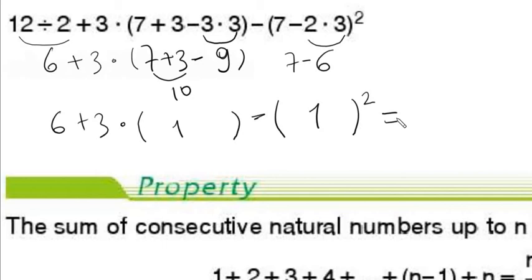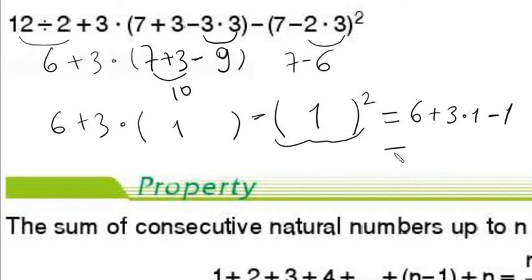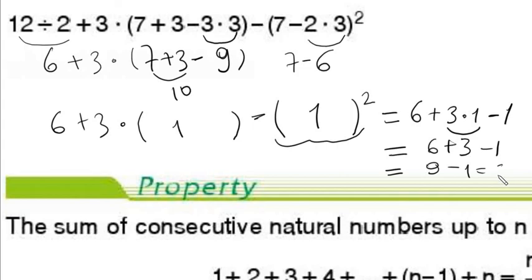We have brackets but inside there is only one number, and we have an exponent: 1 squared is 1. So we have 6 plus 3 times 1 minus 1. Multiplication takes priority: 3 times 1 is 3. So 6 plus 3 minus 1, from left to right: 6 plus 3 is 9, 9 minus 1 is equal to 8.